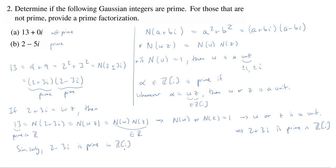So this is how we know 13 is not prime in the Gaussian integers, because we have a prime factorization, and we actually know the prime factors.